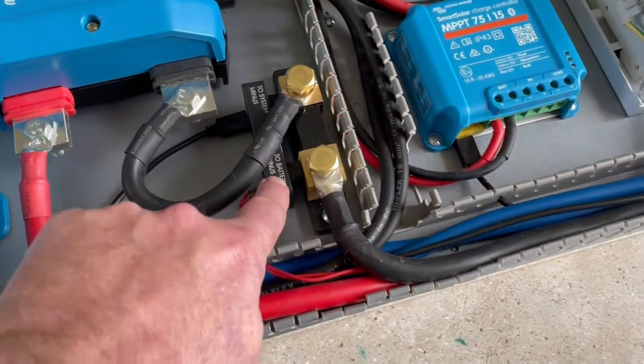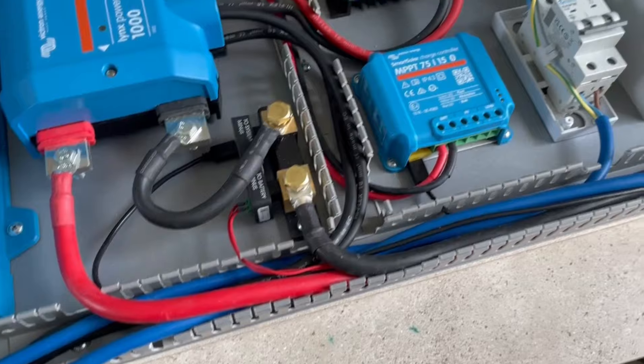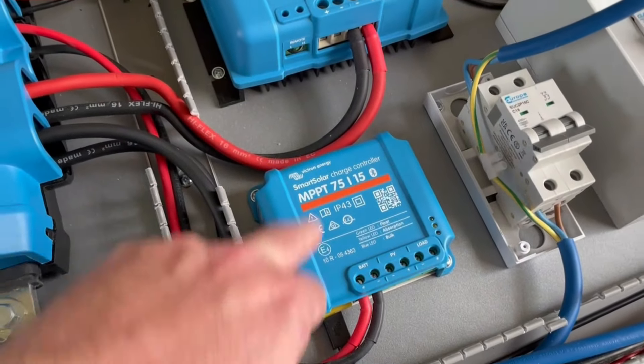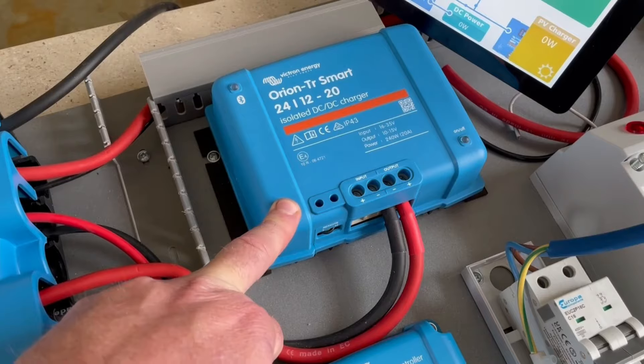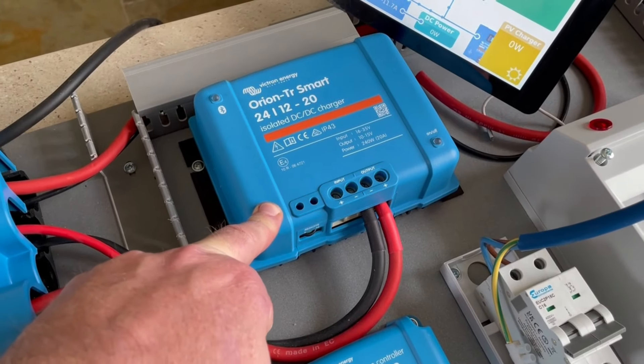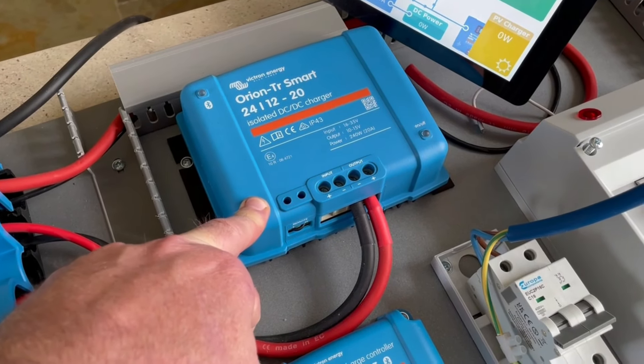That's connected via a Victron Smart Shunt. We've got an MPPT solar charge controller and a 24 to 12 volt DC-DC converter so we can charge the batteries while running the truck.